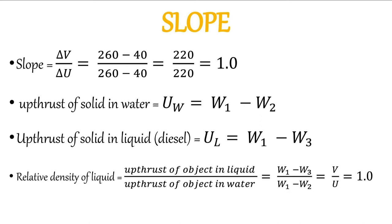The physical representation of this slope relates to the formula for relative density. The upthrust of the solid in water (U) was deduced as W1 − W2, and the upthrust of the solid in diesel (V) is W1 − W3. The relative density of a liquid equals the upthrust of the object in that liquid divided by the upthrust of the object in water, which is V over U. Therefore, the slope of 1.0 represents the relative density of diesel.